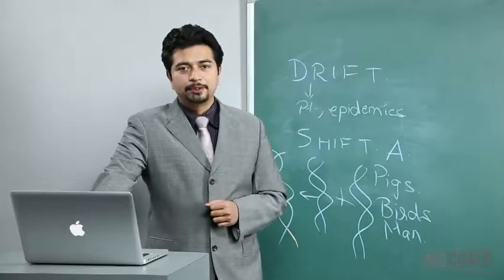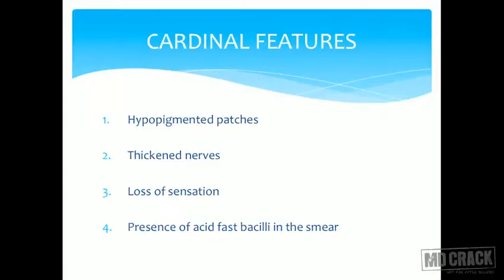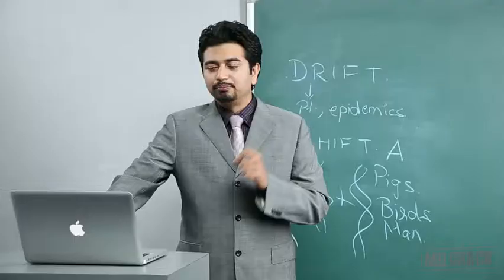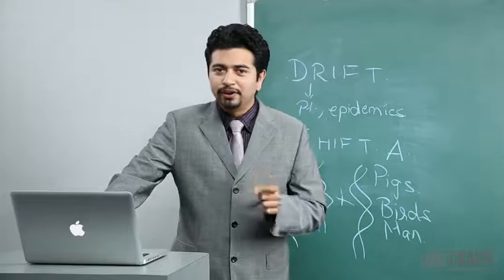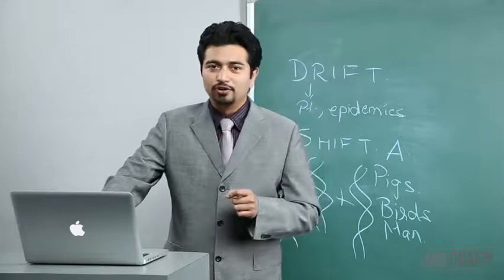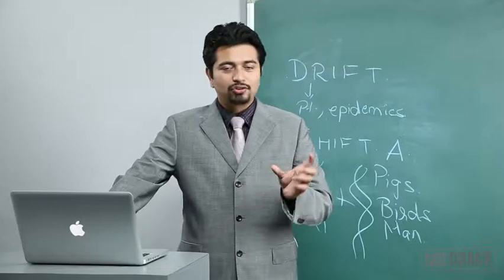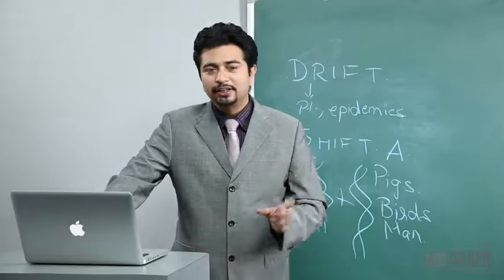The cardinal features of leprosy — highly testable — are: hypopigmented patches, thickened nerves, loss of sensation in the area of the nerve, and presence of acid-fast bacilli in smears. Mycobacterium leprae is the causative agent — it is the 'brother' of Mycobacterium tuberculosis, both being mycobacteria that share many properties, including richness in mycolic acid.